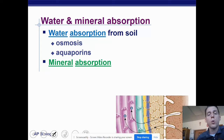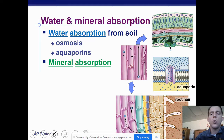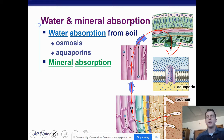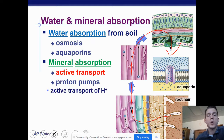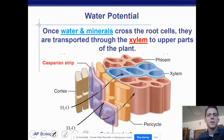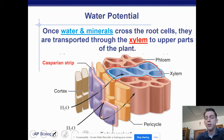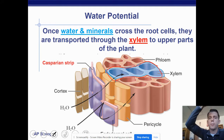Water is going to use aquaporins to move into the root. We can see water moving from the root to the xylem, up the xylem, and out through the leaf. Minerals move through active transport with proton pumps. Once water and minerals cross the root cells, they reach the xylem — the blue part in the middle — and water crawls up the xylem, thanks to the vacuum created by evaporation and thanks to cohesion and adhesion.